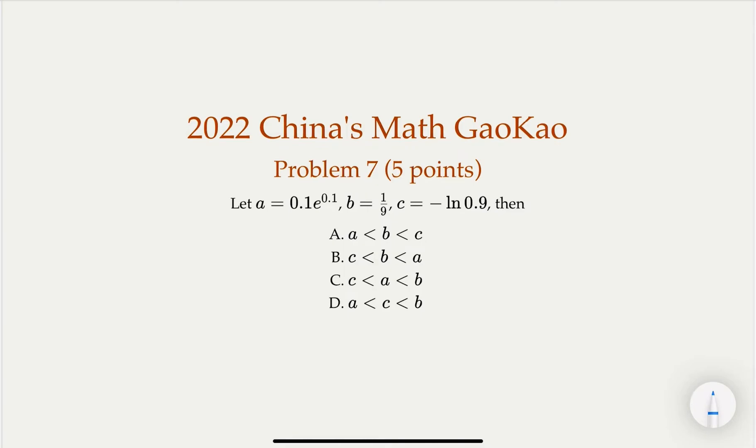Okay, here we're given 2022 China's Math Gaokao, which is a college entrance exam. It is problem number 7, a multiple choice problem worth 5 points. Alright, here we're given 3 quantities: A, B, and C. A is 0.1 times e to the 0.1 power,